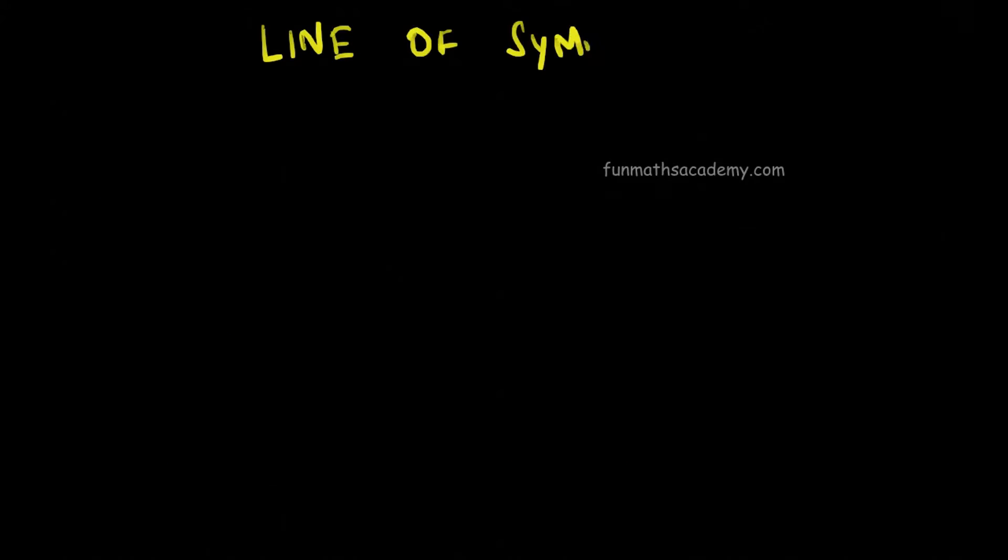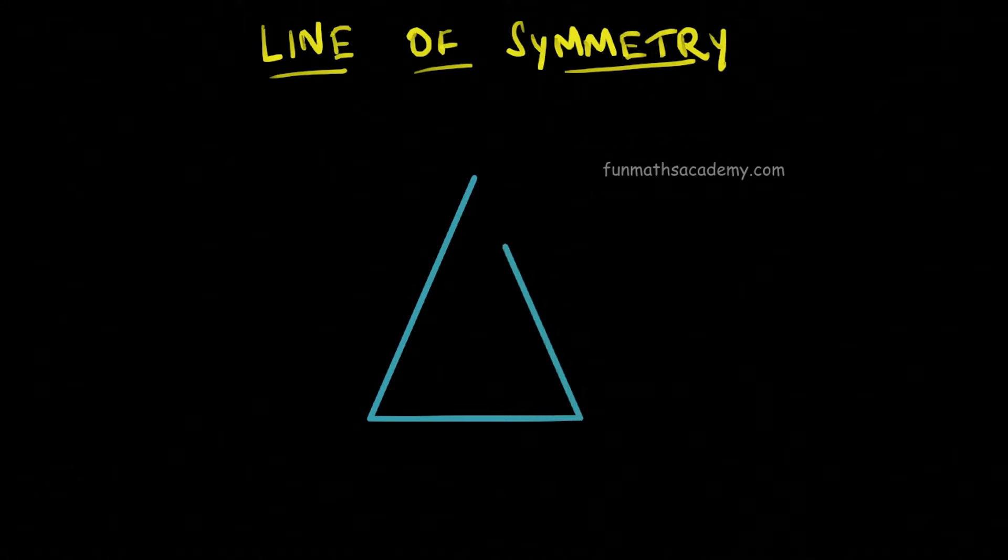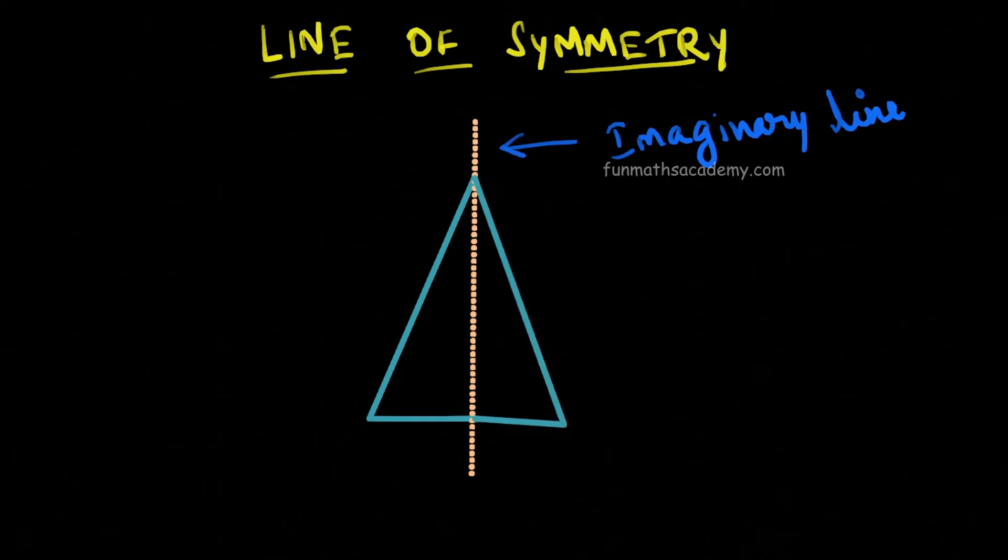But before we begin, let us recall what is line of symmetry. Line of symmetry is an imaginary line. When you fold a shape along this imaginary line, then the two parts on either side of the line will align with each other.